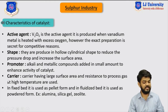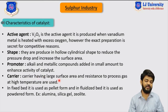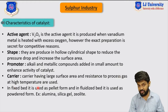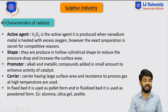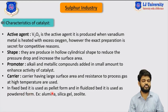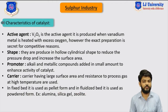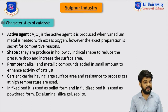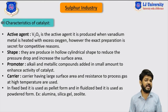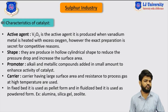The next characteristic is the carrier. Carriers having a large surface area and resistance to process gas at high temperatures are used. In a fixed bed, the catalyst is used in pellet form, and in a fluidized bed, it is used in powder form. The carriers generally used are alumina, silica gel, and zeolites.